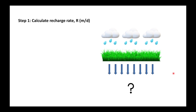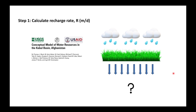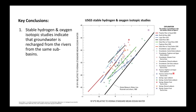However, this doesn't help us much because we need a recharge rate in meters per day. More recently the USGS did a study by Thomas Mack and his team. Stable hydrogen and oxygen isotopic studies indicated that groundwater in certain areas matches the rivers in the same area — for example the blue line showing the Logar River matches groundwater marks in the Logar area.